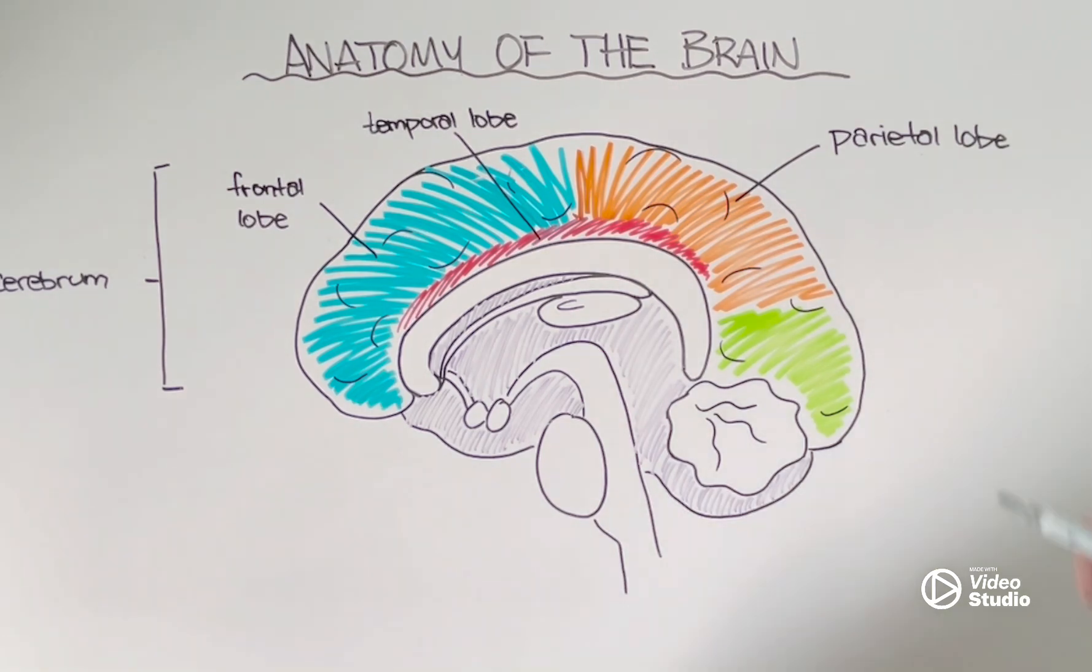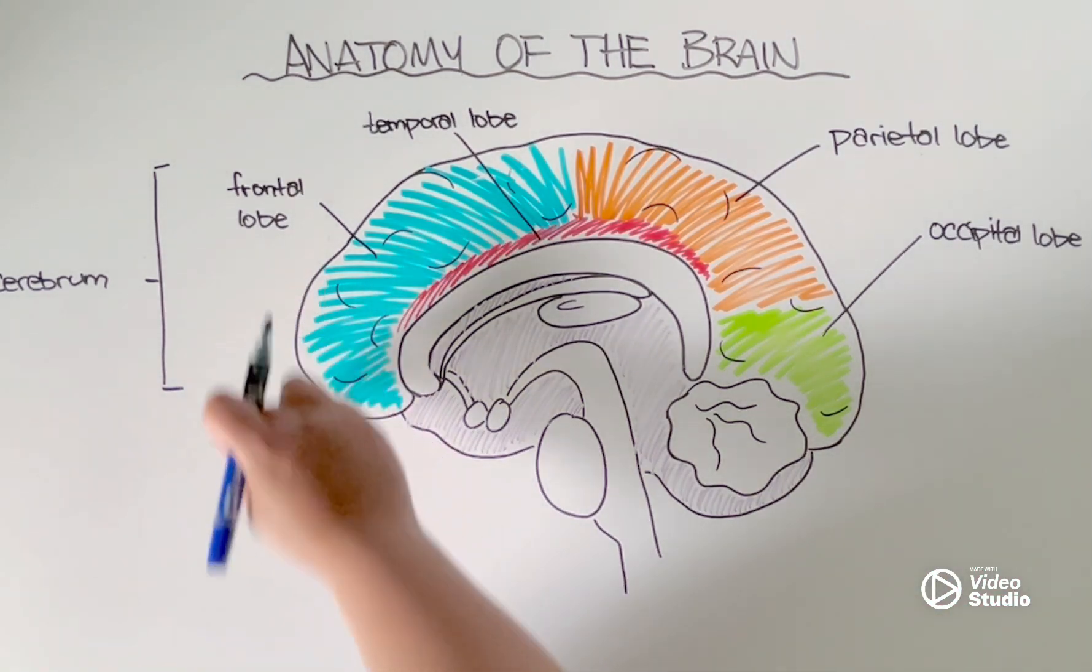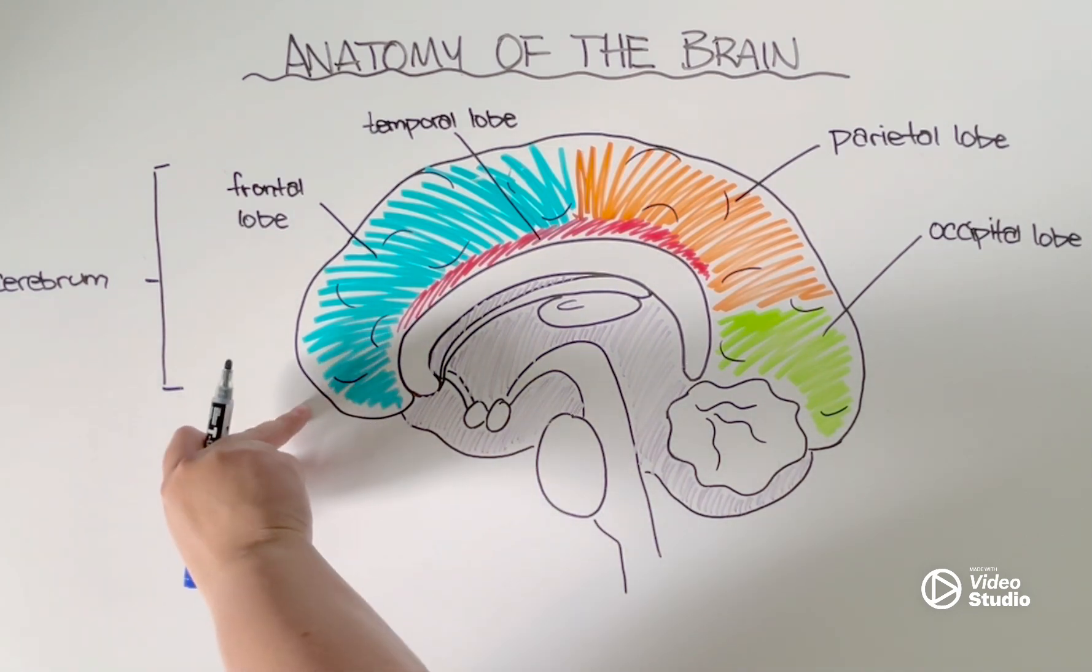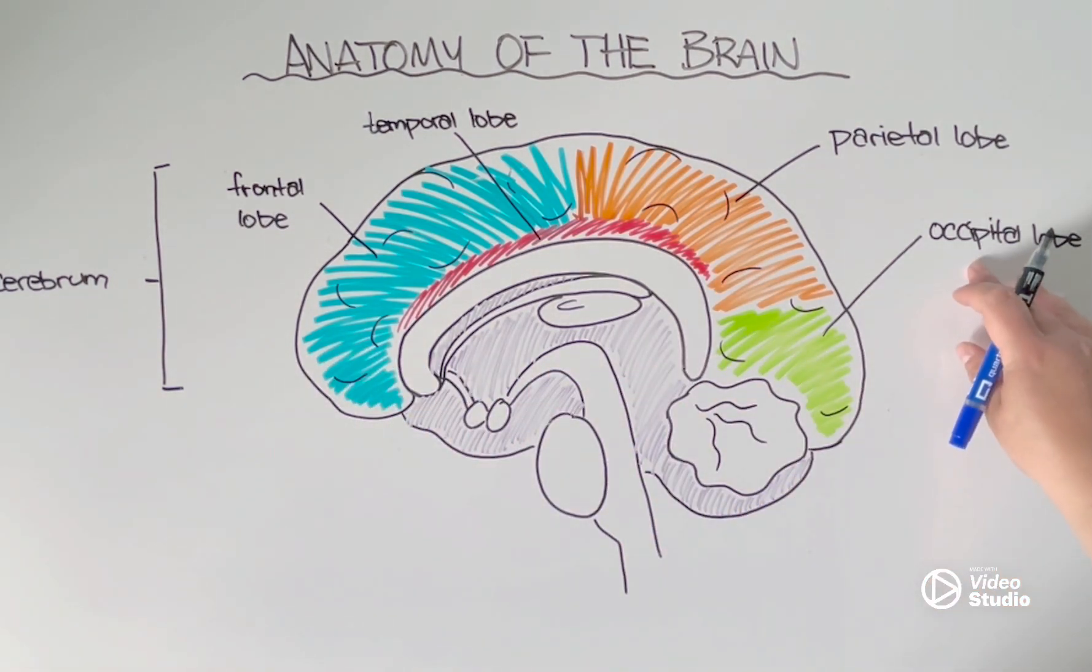And then lastly, at the very back of the brain here, we have another region of the cerebrum known as the occipital lobe. The occipital lobe is responsible for taking in information related to your sight. So, when your eyes, which are up here, collect information from wavelengths of light, that information actually needs to be transmitted all the way to the back of the brain into the occipital lobe in order for your brain to actually interpret and make sense of that info.